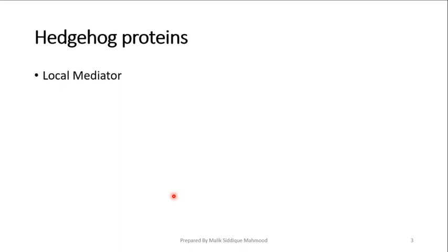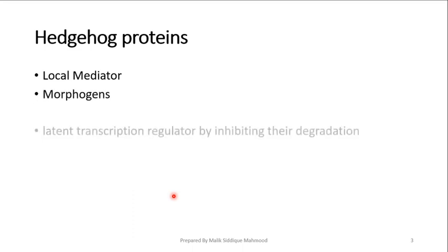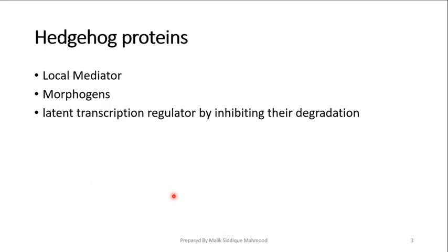Hedgehog proteins are found to function like Wnt proteins. Wnt proteins are also working as local mediators. These are also working as local mediators. Hedgehog signals neighboring cells to accelerate developmental responses. They cause different types of shape changes like morphogens. In this way they act as latent transcription regulators.